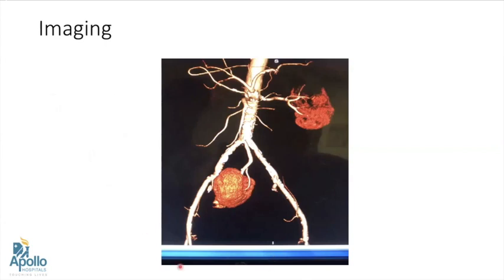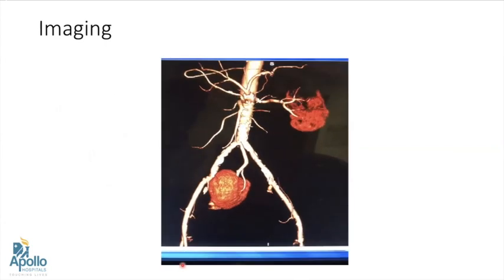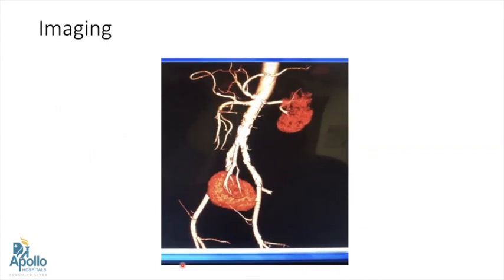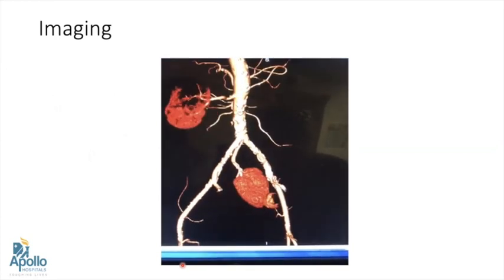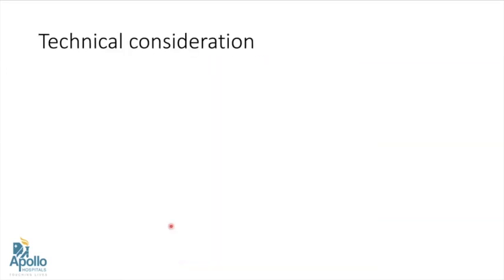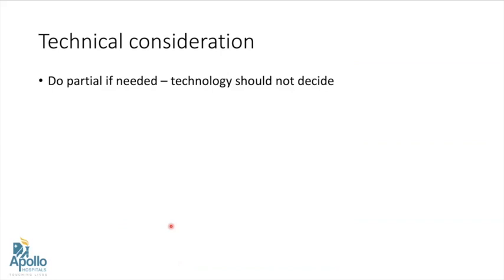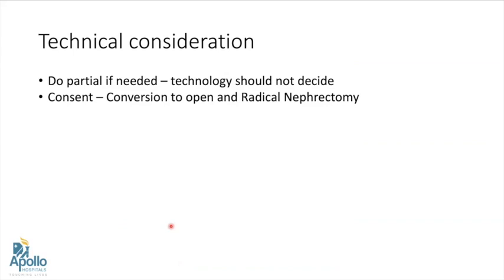Imaging plays a very important role in partial nephrectomy, and a good 3D reconstruction is a blessing — knowing the vascular anatomy means roughly 25 to 30 percent of the job is done. Regarding technical considerations: if partial nephrectomy is indicated, we should always attempt it, and technology should not decide the form of treatment. Consent for conversion to open and radical nephrectomy should always be taken. A good assistant, especially in robotic surgery, is a great help.